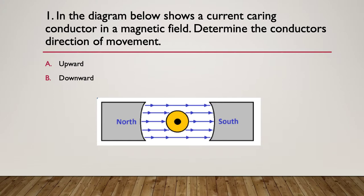So here we go, question one. In the diagram below shows current carrying conductor in a magnetic field. Determine the conductor's direction of movement. Is it going to go up? Is it going to go down?